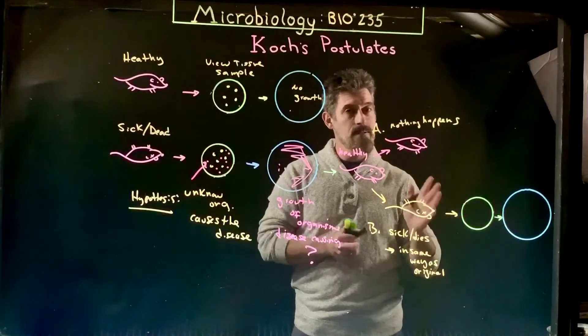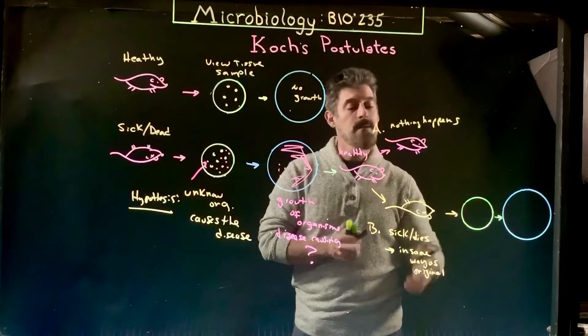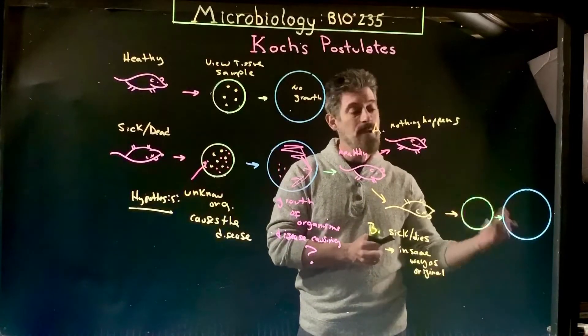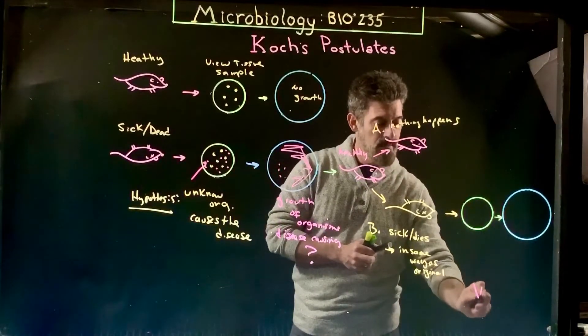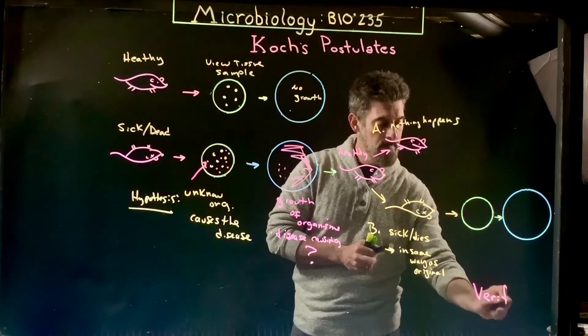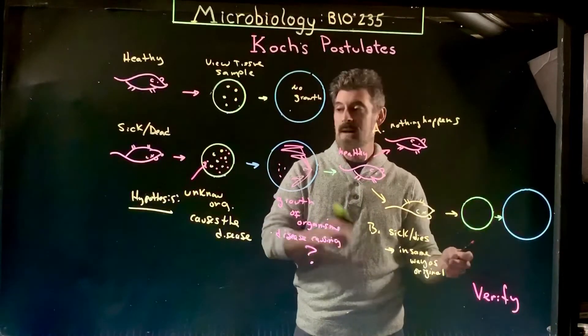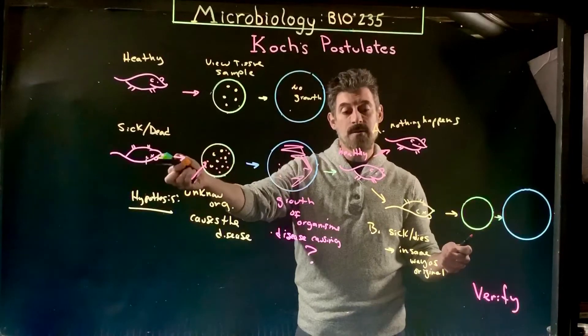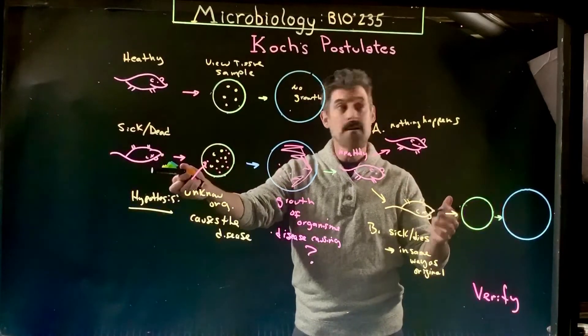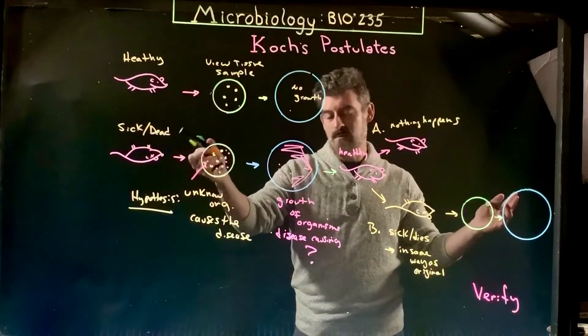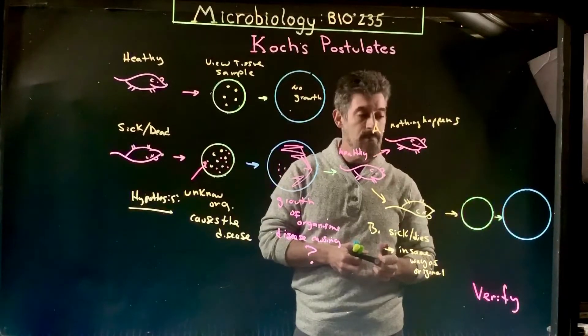You can say, 'Oh look, I identified, found an organism, isolated it, injected healthy individuals and they died seemingly the same way, so that must be it.' But that's still not it yet. What we really need to do now is verify that this organism is in fact the same one that caused the original disease. Otherwise, it could be something that causes a different disease and you're not really getting the same thing as the original.